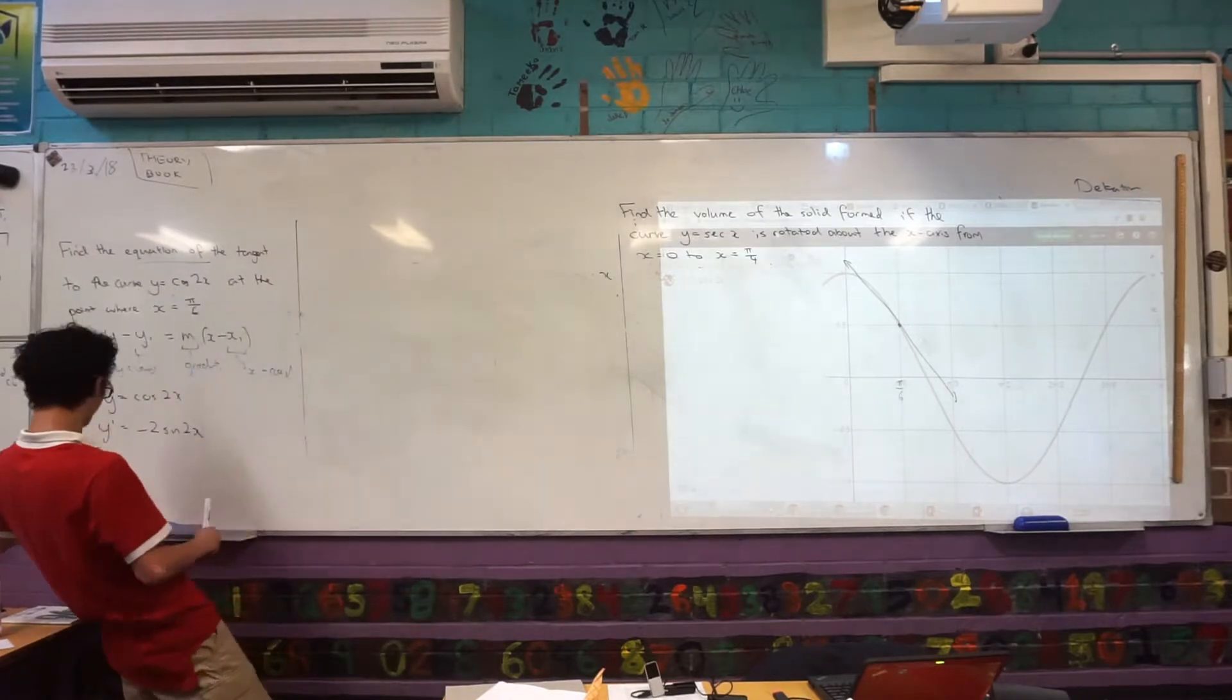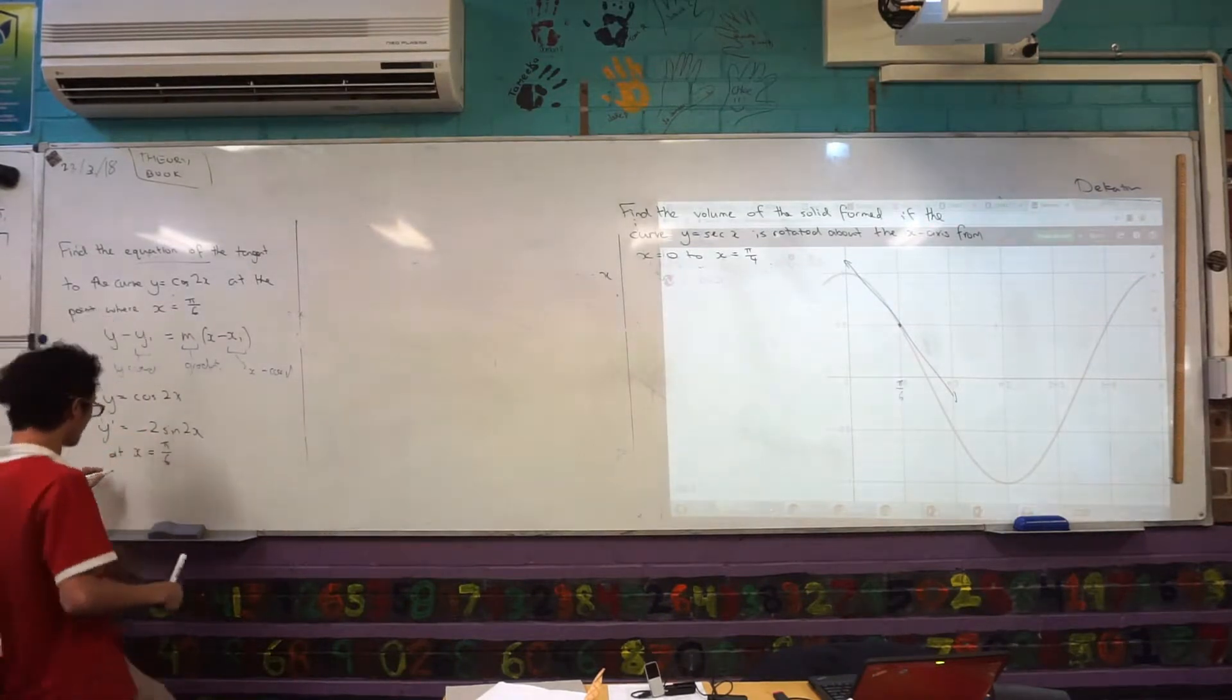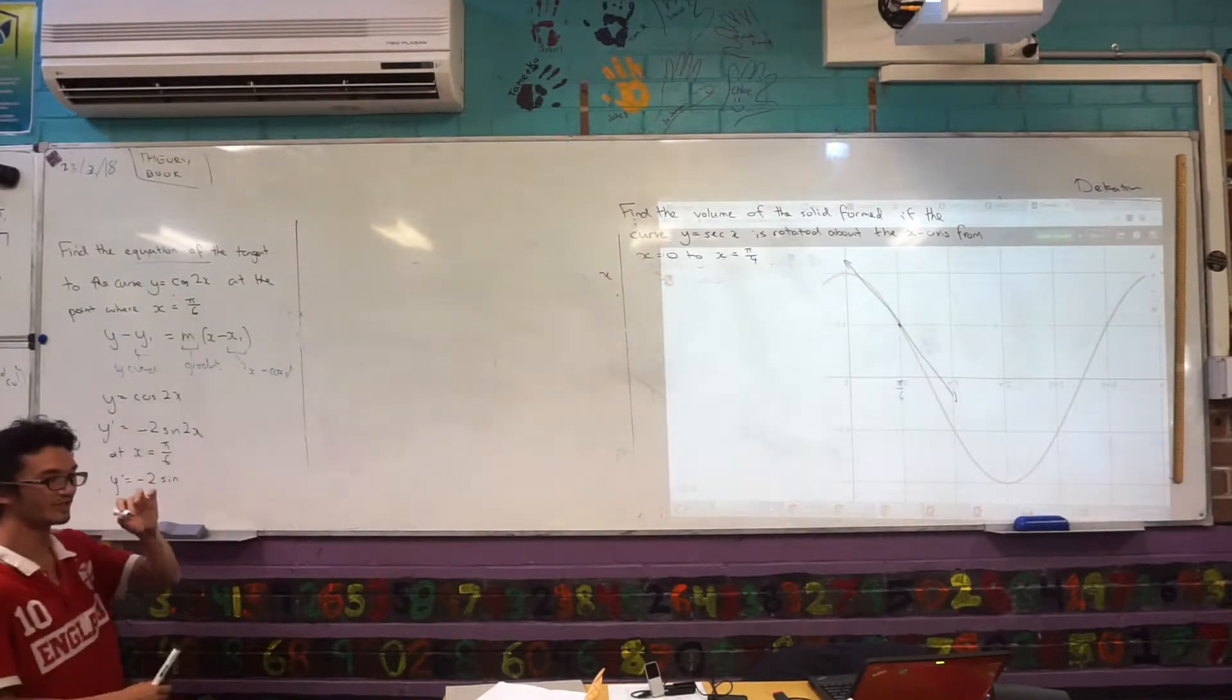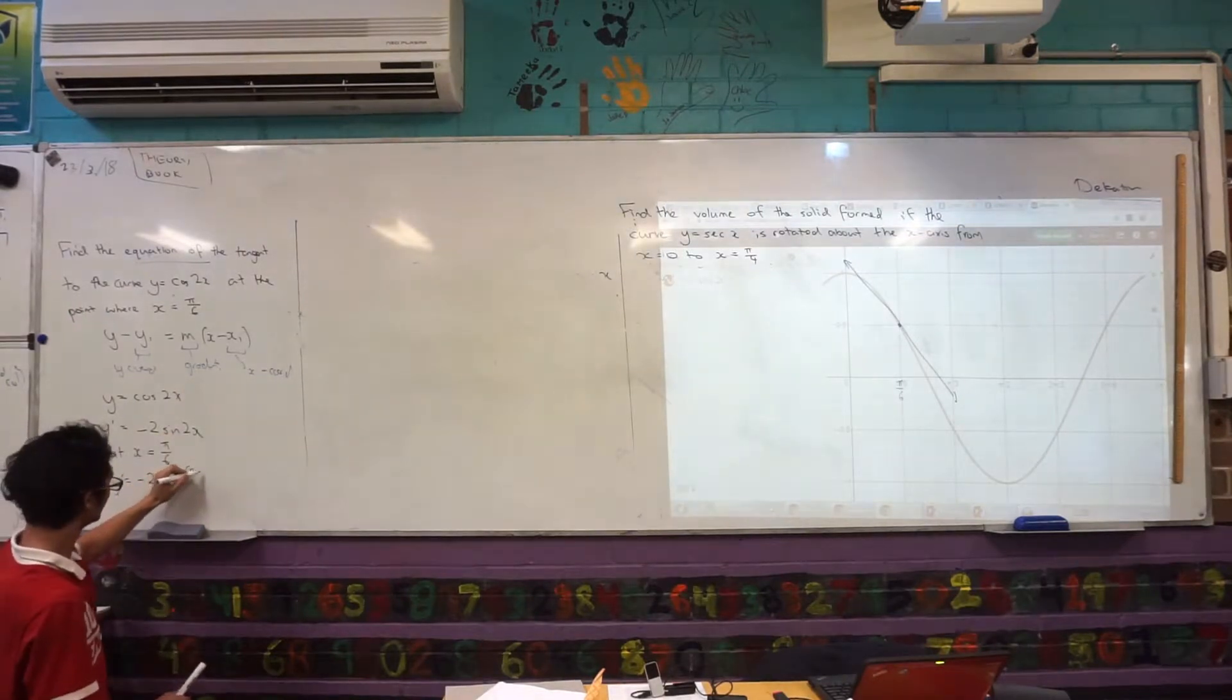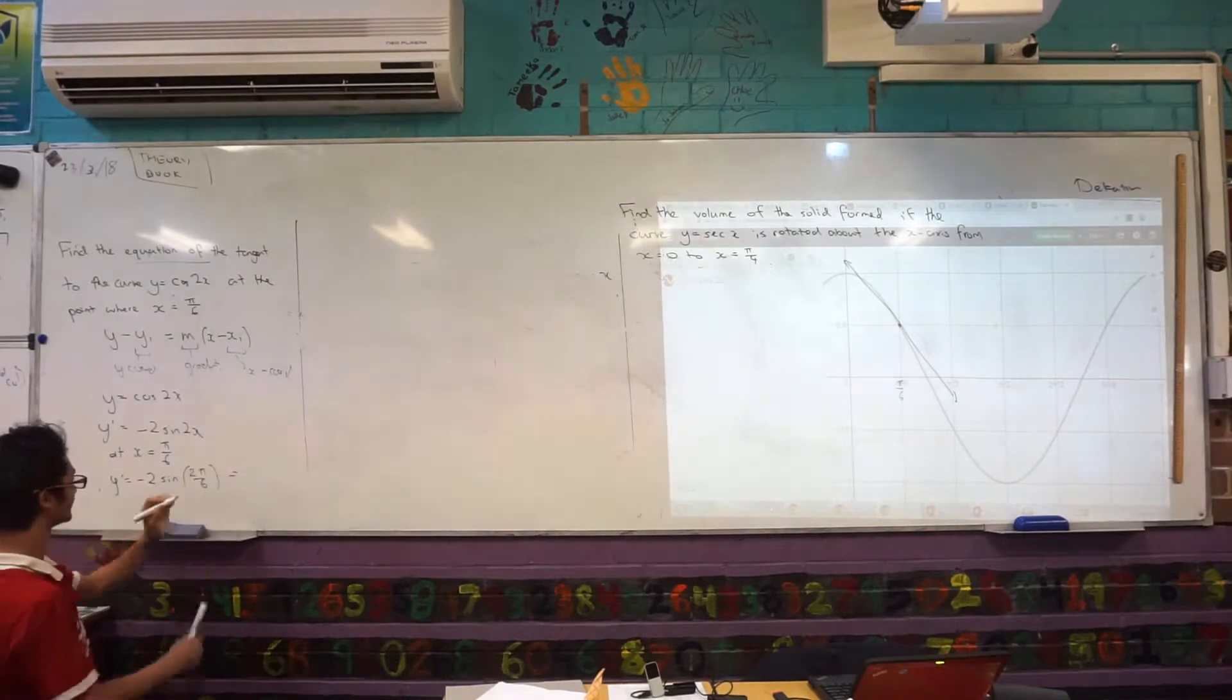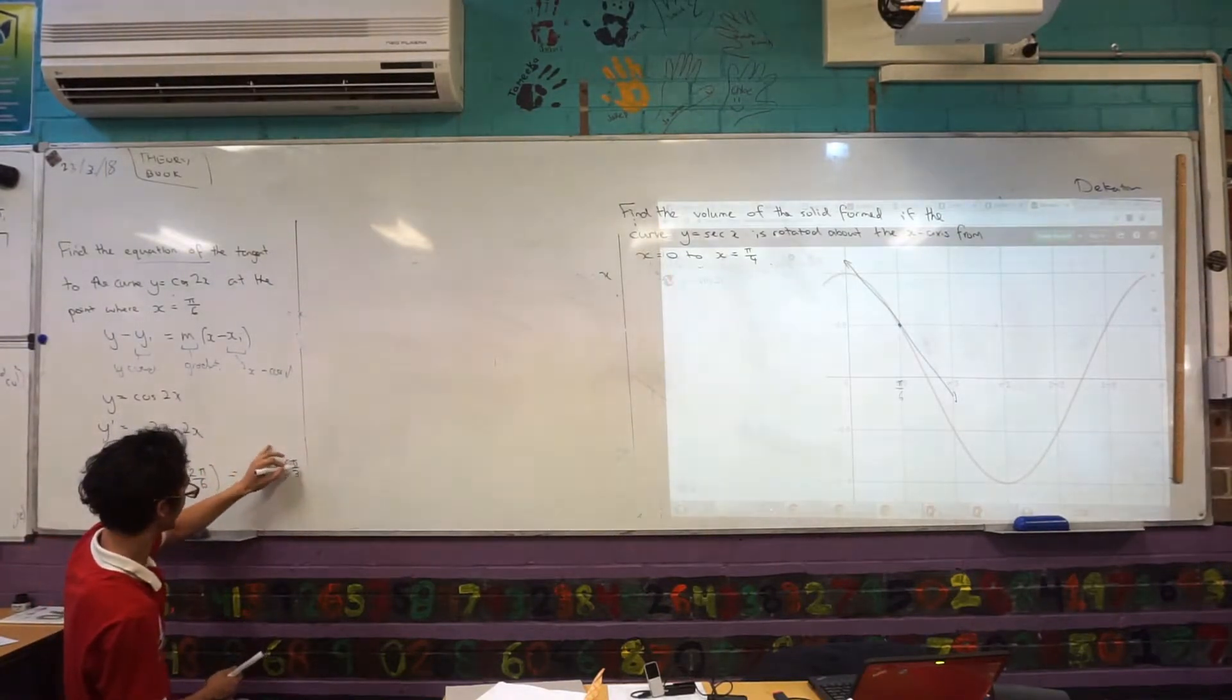So I'll say, I'll write down here, at x equals π/6, y dash is equal to negative 2 sine, be careful here, because that 2, that coefficient is actually inside the function, so let me just draw some brackets, 2(π/6), but that's just going to simplify really nicely. What's 2 times 2π/6? That's just right, negative 2 sine(π/3).